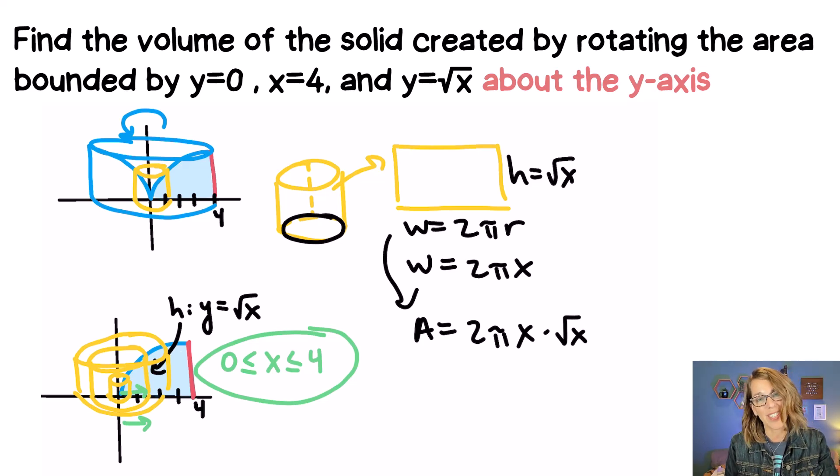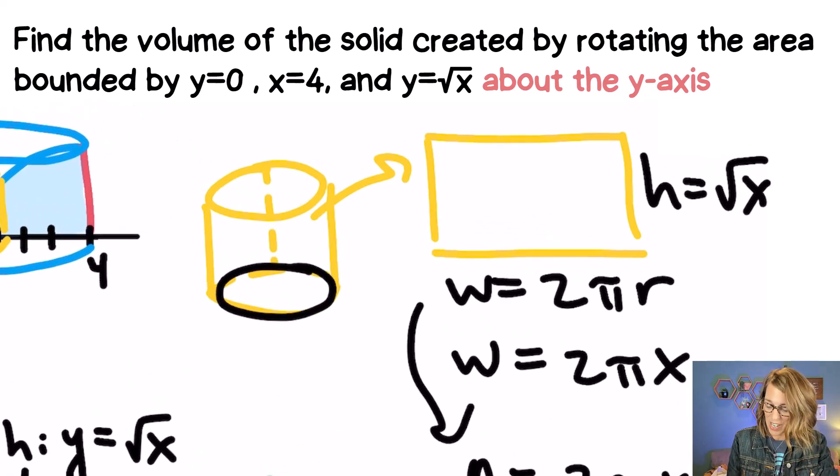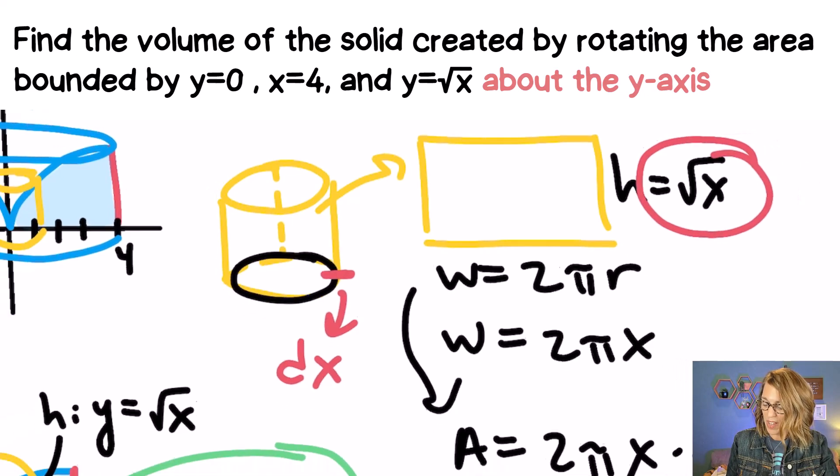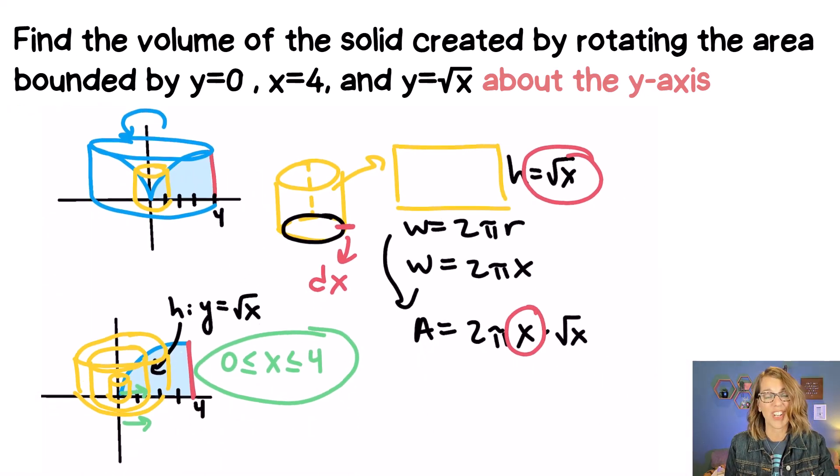Now there's one other thing that we need and that's the thickness. The thickness is going to be perpendicular to the height. This is what's going to determine my variable of integration. That thickness in this case perpendicular to your height is a dx. So we do want to keep all of our variables of integration in terms of x.